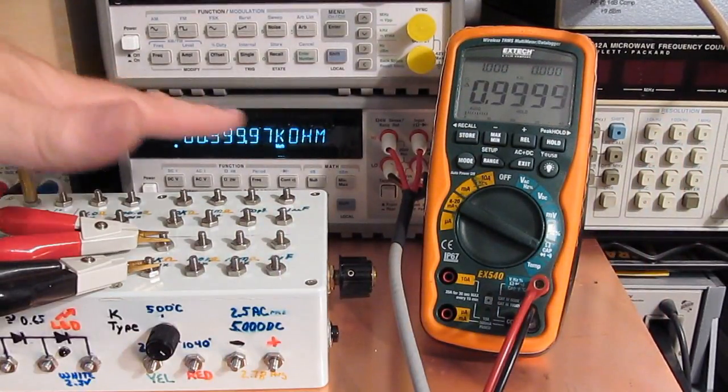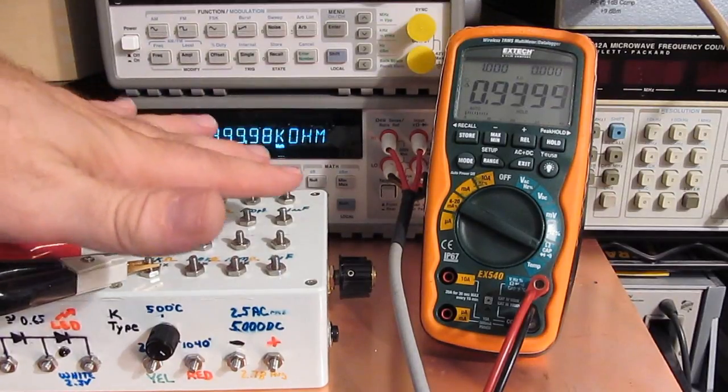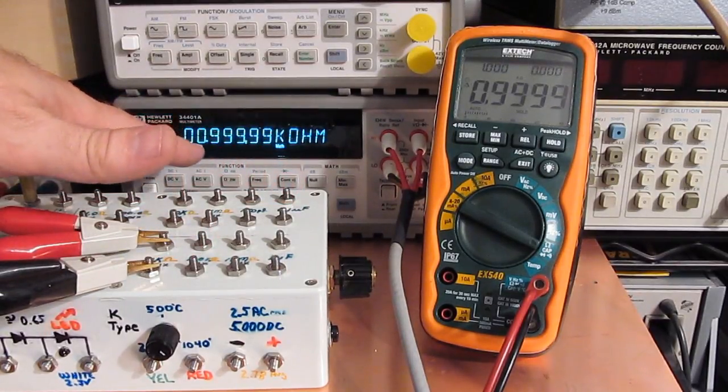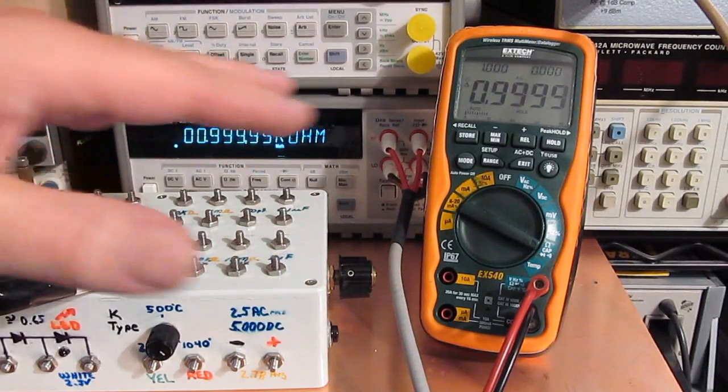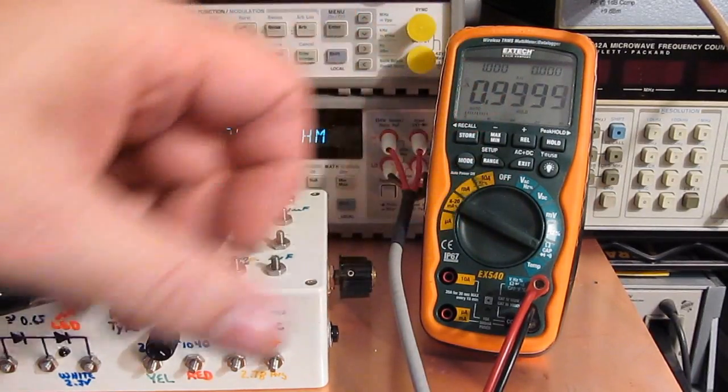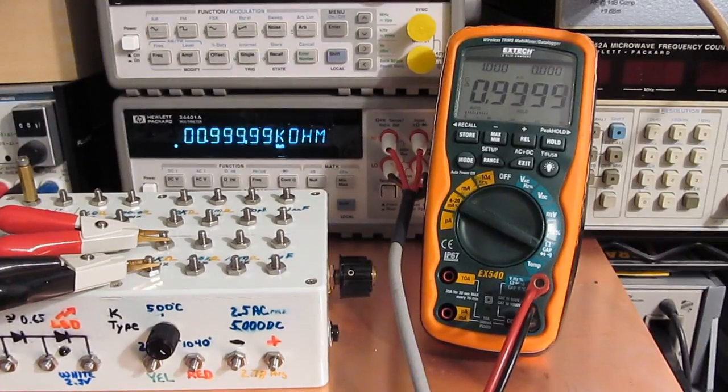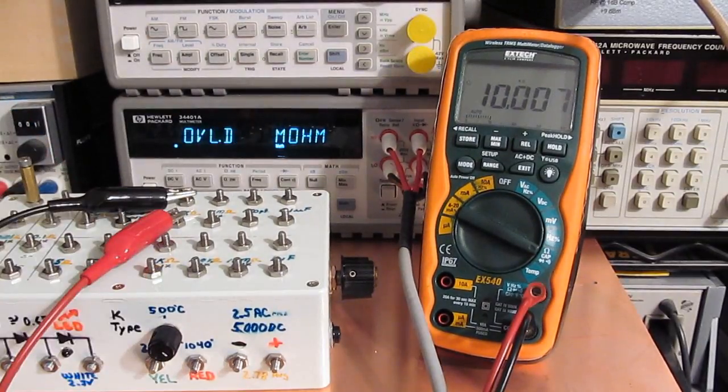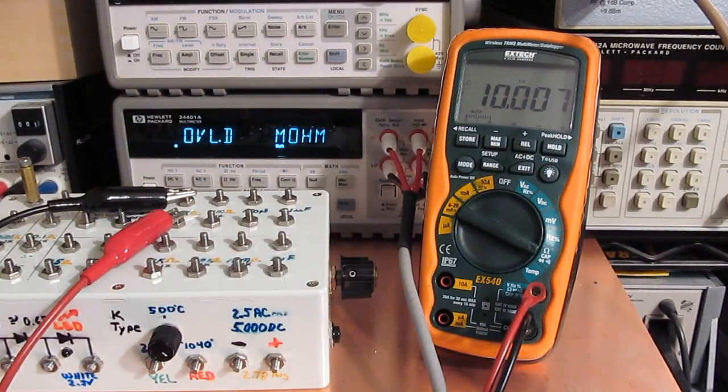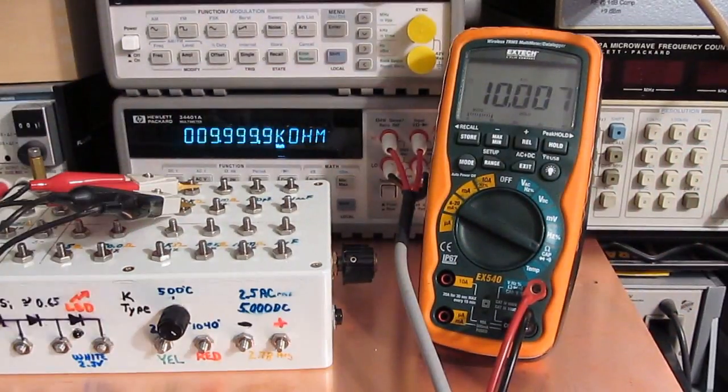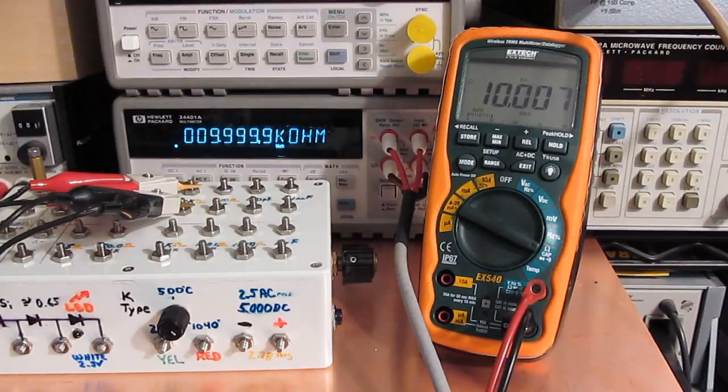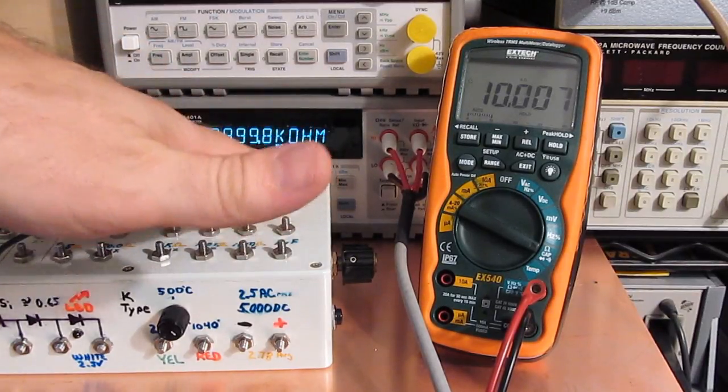I can see it moving around a little bit here as I kind of raised my hand over it. Again we are 0.99999k ohms. So again I'd say the XTAC EX540 is pretty much dead on. With a 10k ohm resistor we are 9.9999k ohms with the HP and 10.007 with the XTAC.